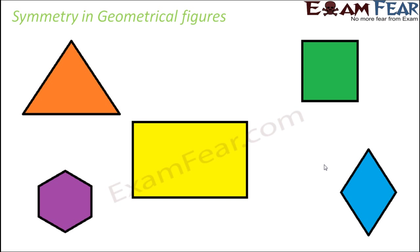You can see many figures on the screen like a triangle, rectangle, square, quadrilateral, hexagon, etc. So let's see how many lines of symmetry each of these have.